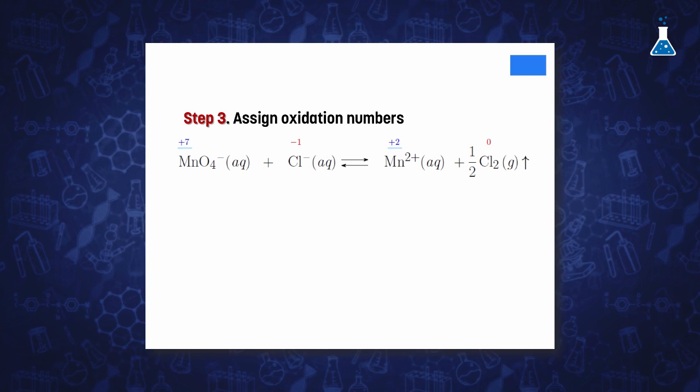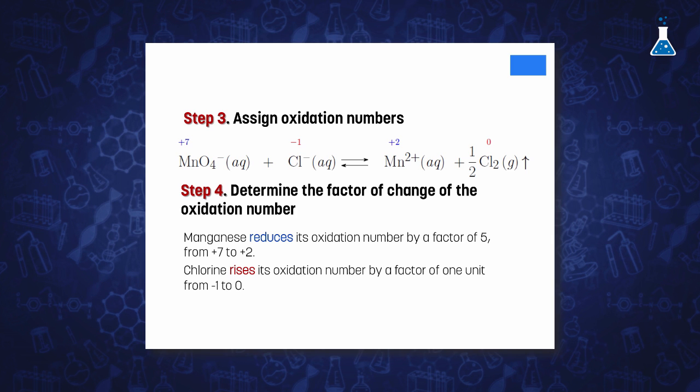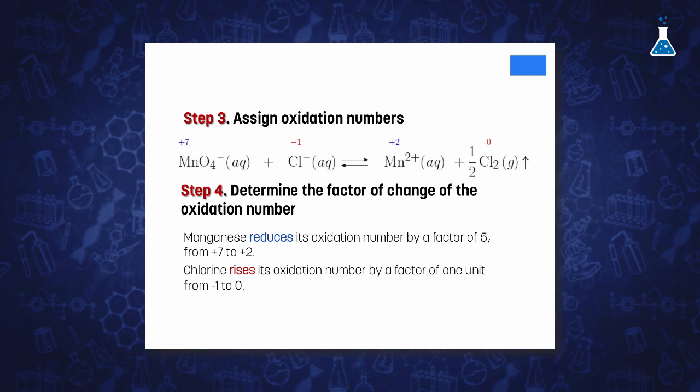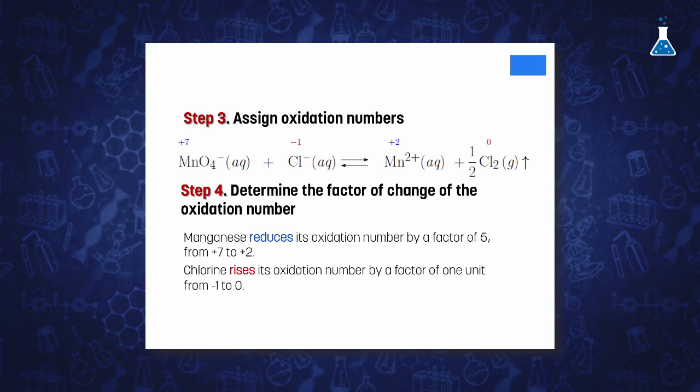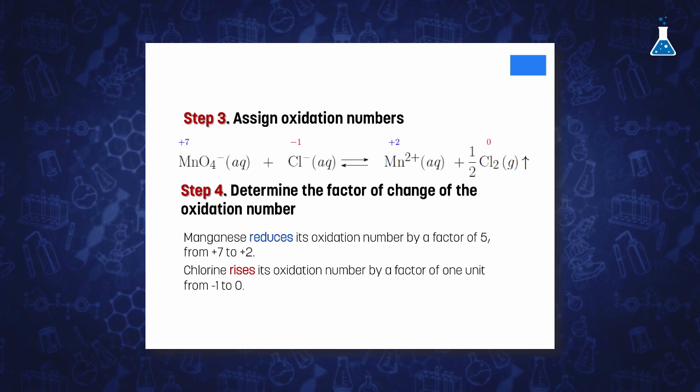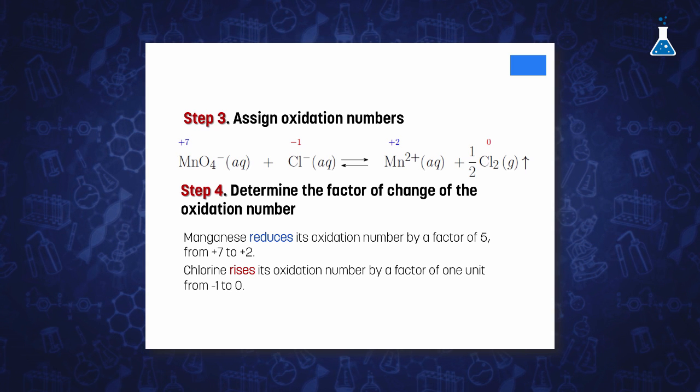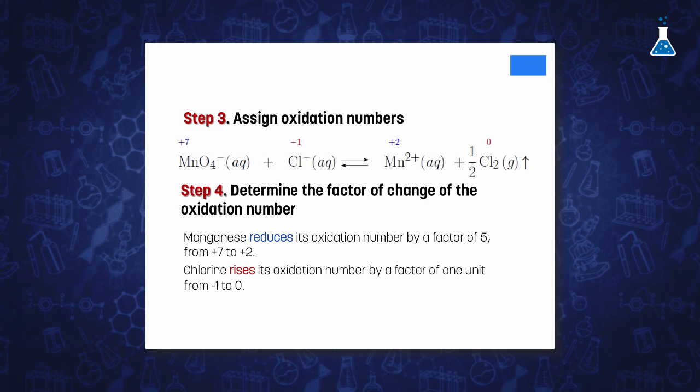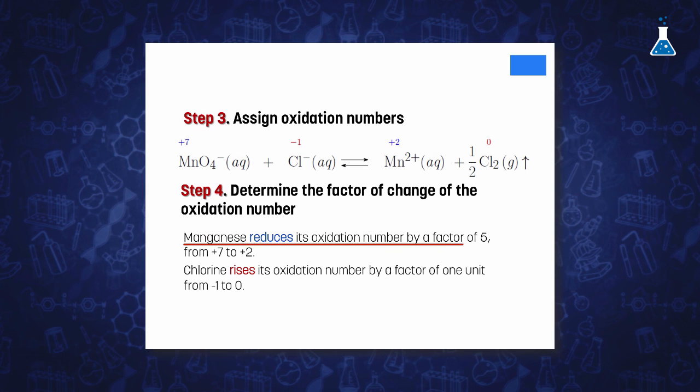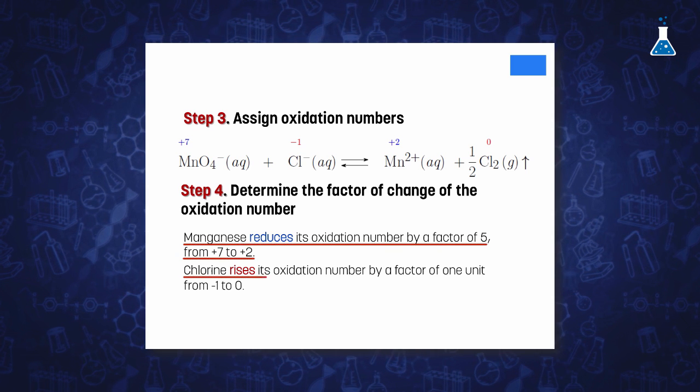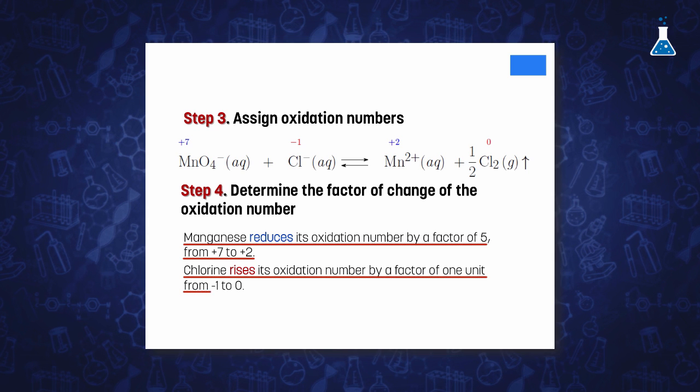Now, we need to determine by what factor has changed the oxidation state of the compound that is being oxidized, and similarly, how has changed for the substance that is being reduced. In our sample, manganese is reduced by a factor of 5, while chlorine is oxidized by a factor of 1.